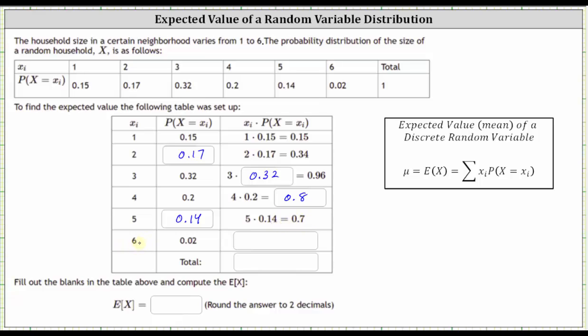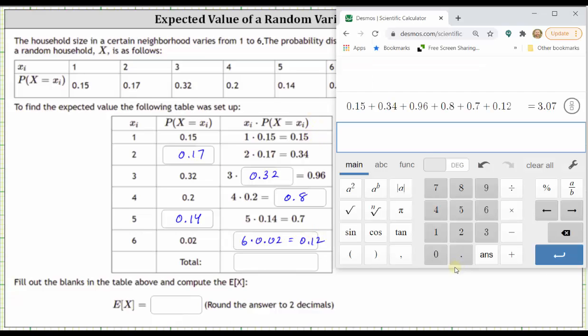For the next row when X equals six, we already have the probability X equals six as 0.02 from the table. In the third column we need the product of six and 0.02, which is equal to 0.12. And now to find the expected value or mean, we sum the third column, which is 0.15 plus 0.34 plus 0.96 plus 0.8 plus 0.7 plus 0.12, which is equal to 3.07.